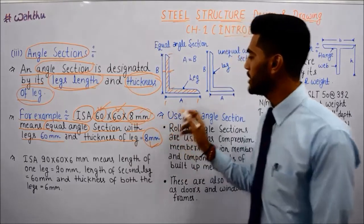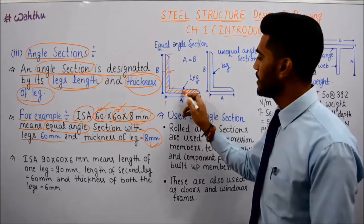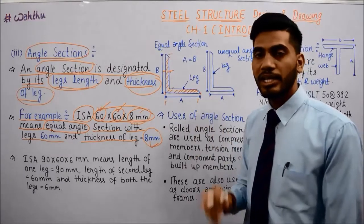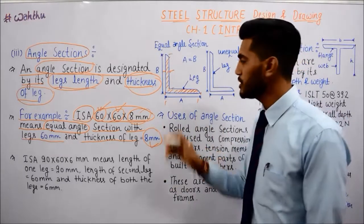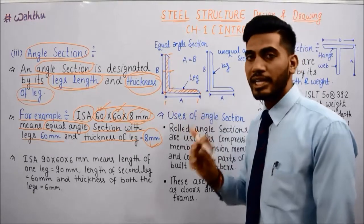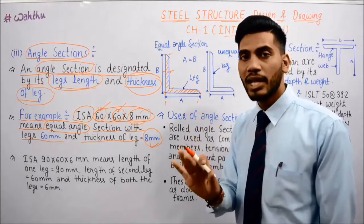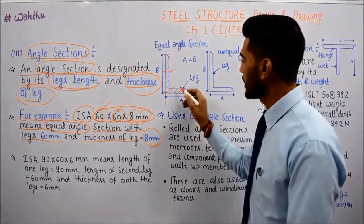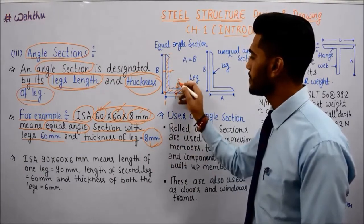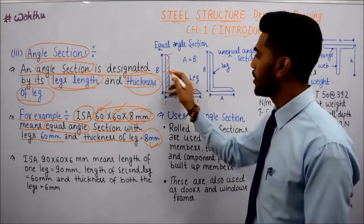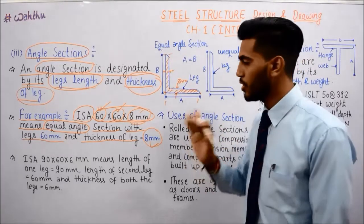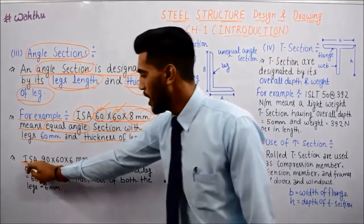This is the leg length of 60mm. The leg length is 60mm and the leg length is 60mm, so this is an equal angle. The thickness is 8mm. This thickness is 8mm. Okay, understood.